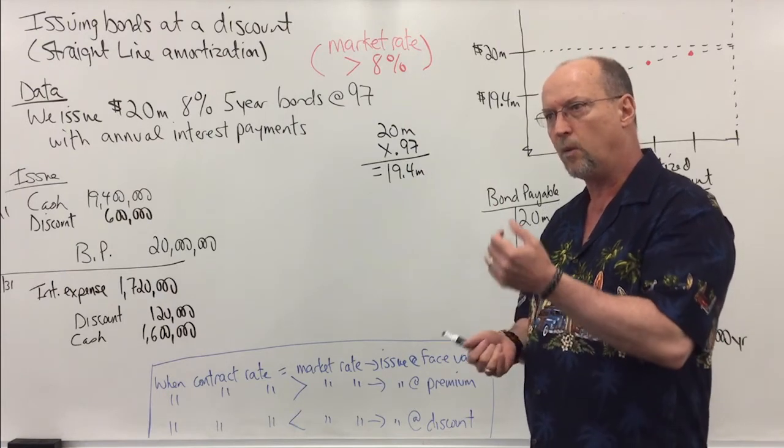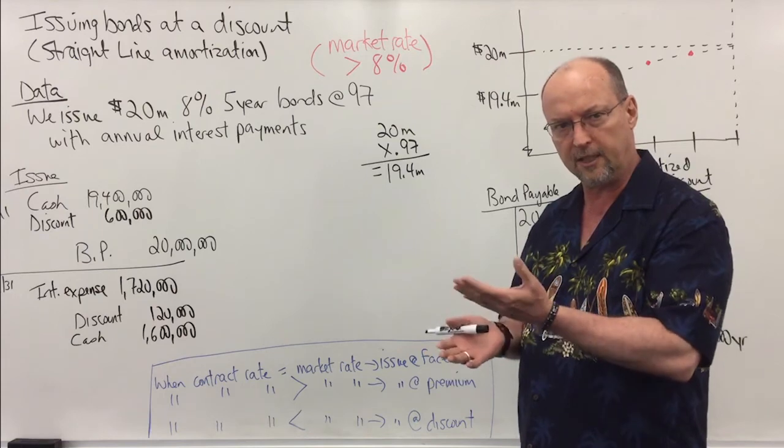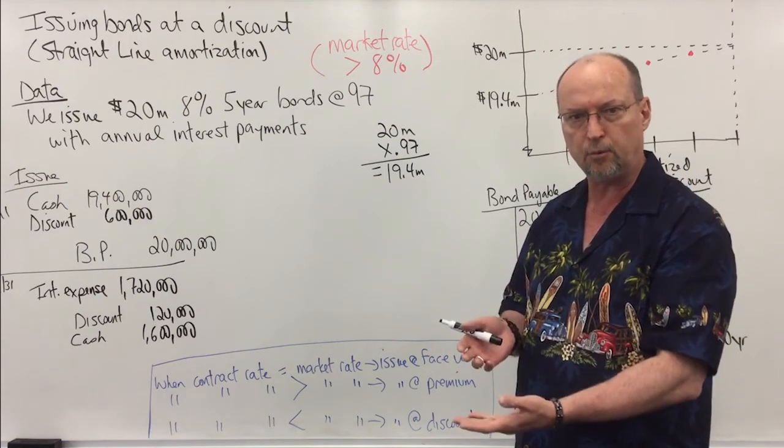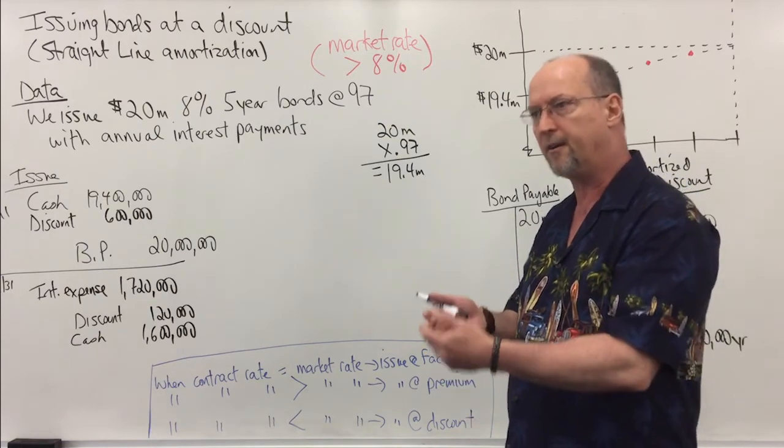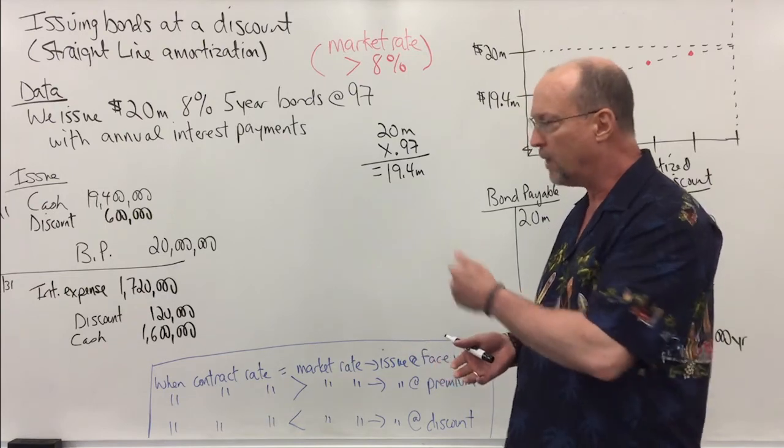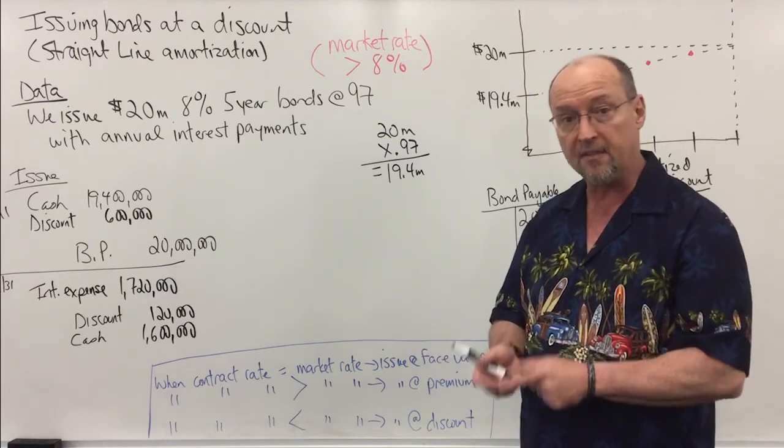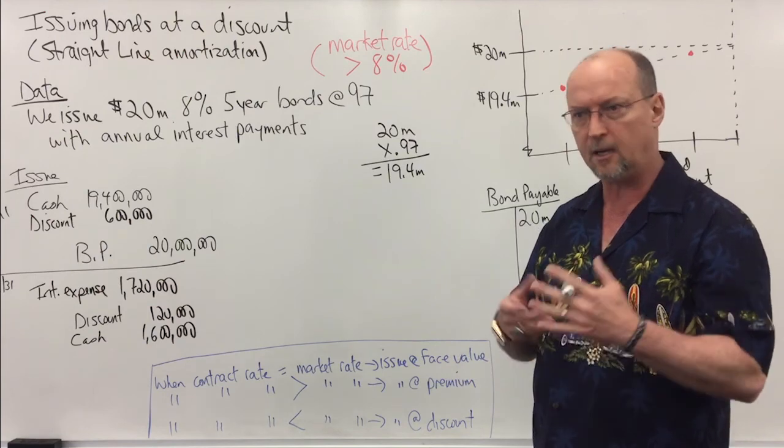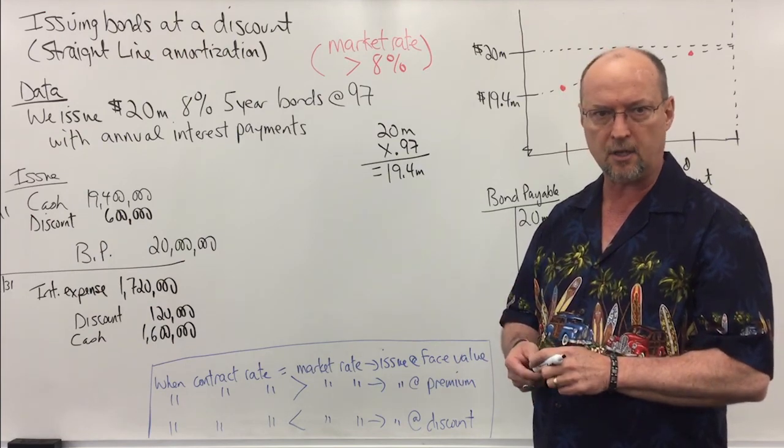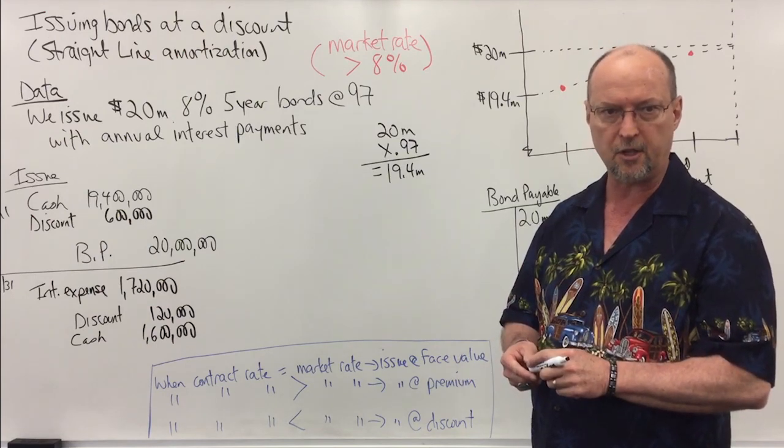And that's because investors know that they can get a better return, a higher interest rate, if they invest elsewhere. So what we do is we compensate for the different interest rates by reducing the price of our bonds so that we are effectively paying whatever the market rate was on the day that we issue bonds. Okay, and that's how we issue bonds and amortize them using the straight-line amortization method.